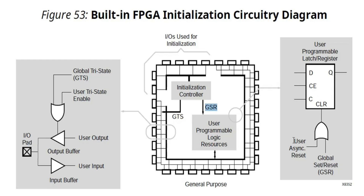Even though we have not pressed the external reset signal. But where does this global set reset signal come from? It comes from a startup block — there is a dedicated hard-coded block inside the FPGA called the startup block. That gives this global set reset signal and it has a dedicated reset routing inside the FPGA. This global set reset signal goes to all the flip-flops inside the design, and that is how all the flip-flops get initialized even if you don't press the external reset.